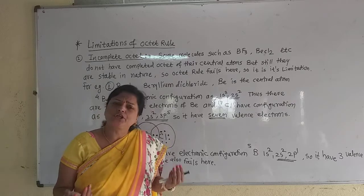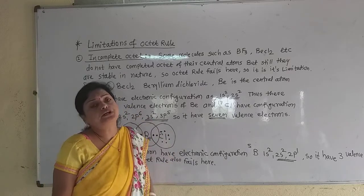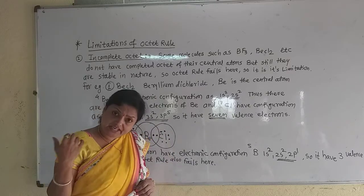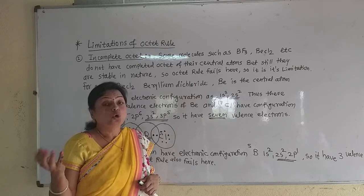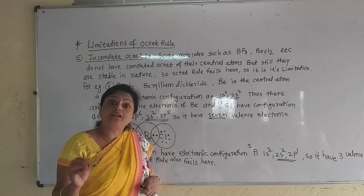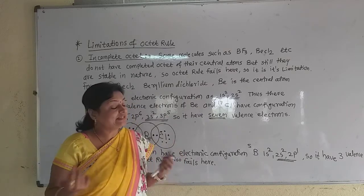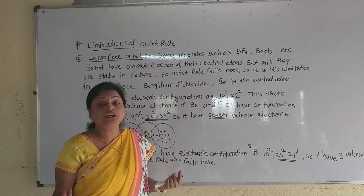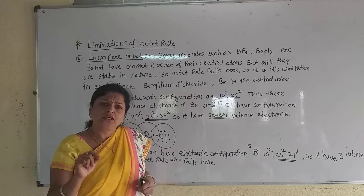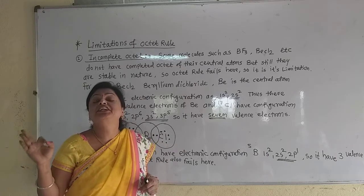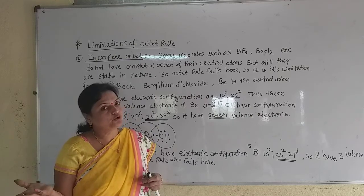Limitation means drawback — that is the errors. Now which are the limitations of the octet rule? In nature, such molecules are stable whose central atom does not complete its octet. That means its valence shell does not have 8 electrons. Still, those molecules are very stable in nature. That means octet rule fails here.